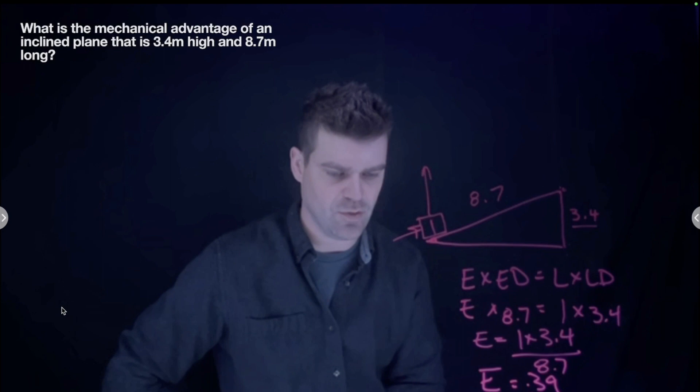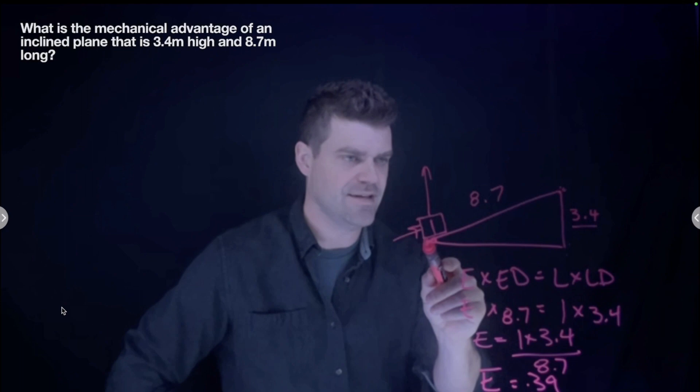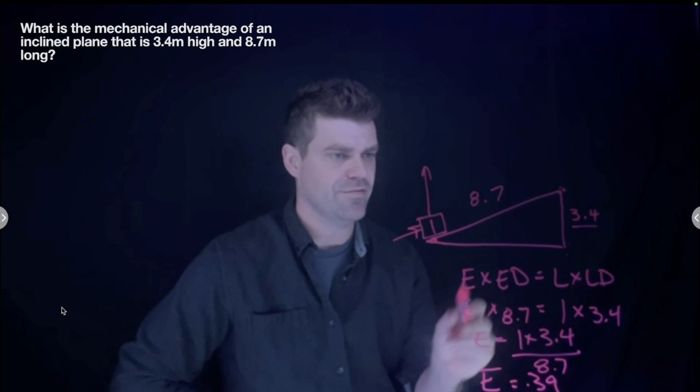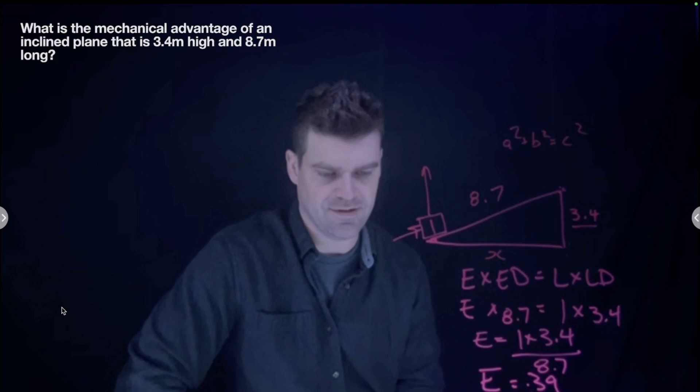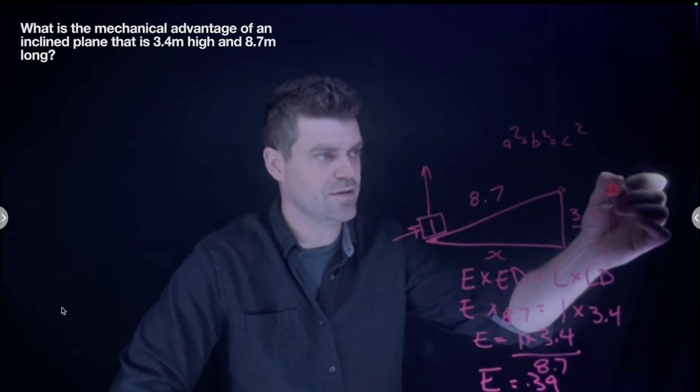Key point for the inclined plane: the effort distance is the length of the ramp and the load distance is the height. If they give you the base distance instead of the ramp length, you'll need to use the Pythagorean theorem — a² + b² = c² — to find it. But in this example I'm keeping it simple to reinforce that the load distance is the vertical distance.